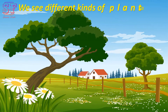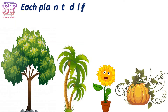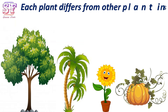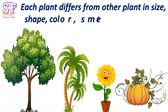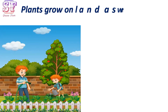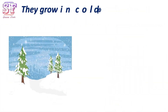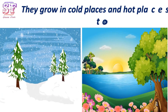We see different kinds of plants around us. Each plant differs from other plants in size, shape, color, smell, and place of growth. Plants grow on land as well as in water. They grow in cold places and hot places too.